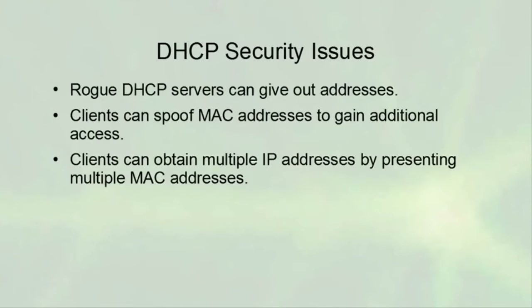Some security issues with DHCP: rogue DHCP servers can give out addresses, which can be a security problem — someone could give you incorrect information. Sometimes someone plugs a home router into your network backwards and it starts issuing addresses. You can block that on the switch, but if not blocked it can cause havoc. Clients can also spoof MAC addresses to gain additional access, though this is more a MAC address security issue than strictly a DHCP problem.